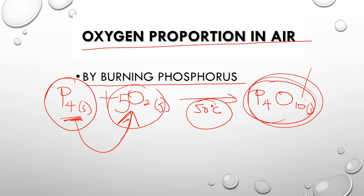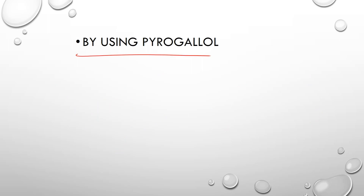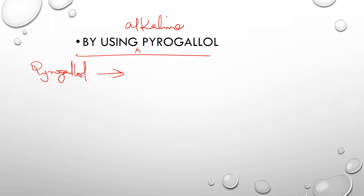Another method uses alkaline pyrogalol. Pyrogalol has a formula of C6H3(OH)3. This is an organic compound used to absorb oxygen and help determine the proportion of oxygen in air.